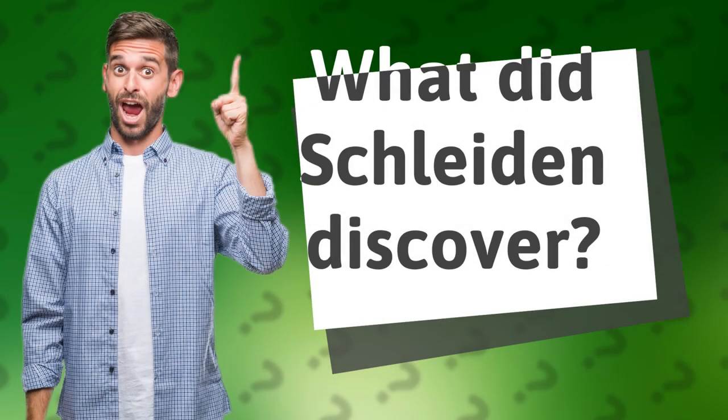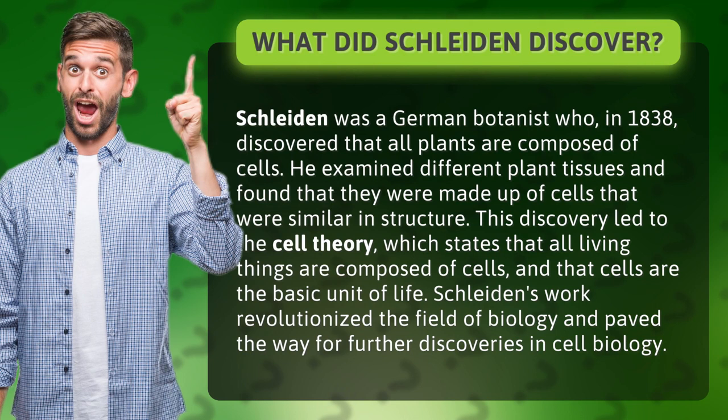What did Schleiden discover? Schleiden was a German botanist who, in 1838, discovered that all plants are composed of cells. He examined different plant tissues and found that they were made up of cells that were similar in structure.